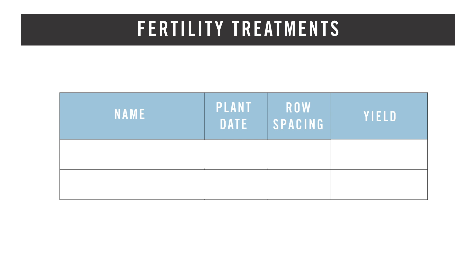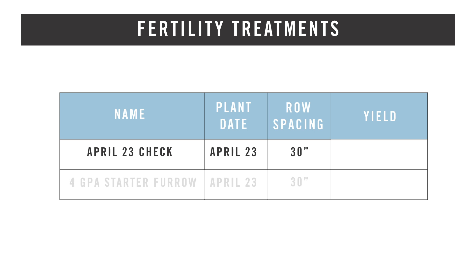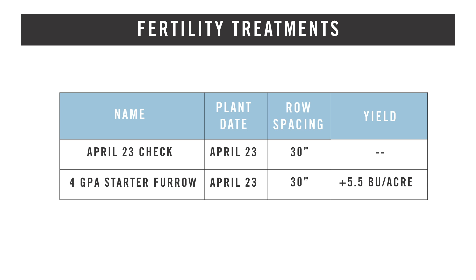We also did a check strip on the April 23rd plant date — a no-starter pass compared to a pass with four gallons of 10-34-0 in-furrow. The strip with 10-34-0 in the furrow actually yielded five and a half bushels more. We fully realize that's a pretty hot rate to put in-furrow with a bean, so we're going to test this in 2020 and see how it plays out.